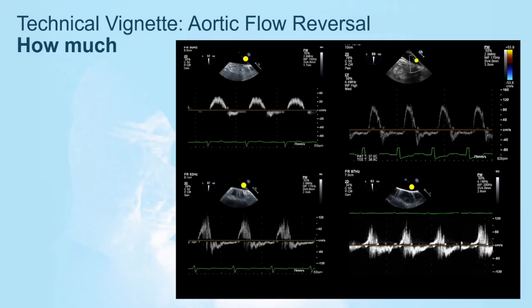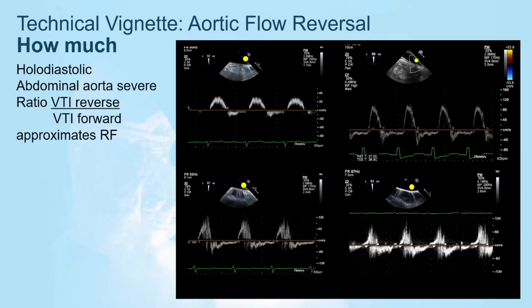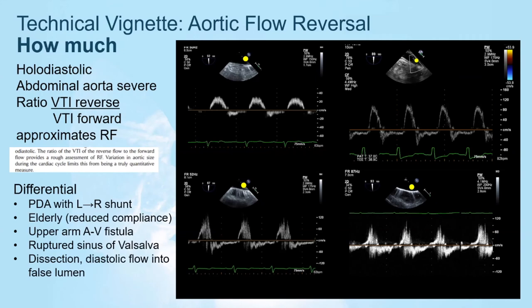To quantify aortic flow reversal: it must be holodiastolic. If present in the abdominal aorta, AI is considered severe. The ratio of forward flow to reverse flow can approximate the regurgitant volume, as shown in Zoghbi's paper. However, elderly patients with reduced aortic compliance may normally have some flow reversal — so don't assume AI just because you see flow reversal in the aorta.